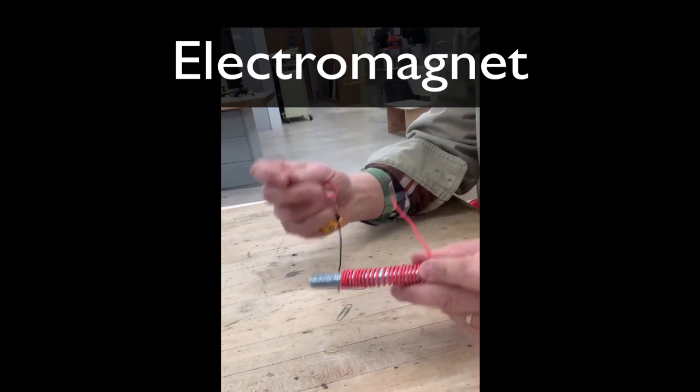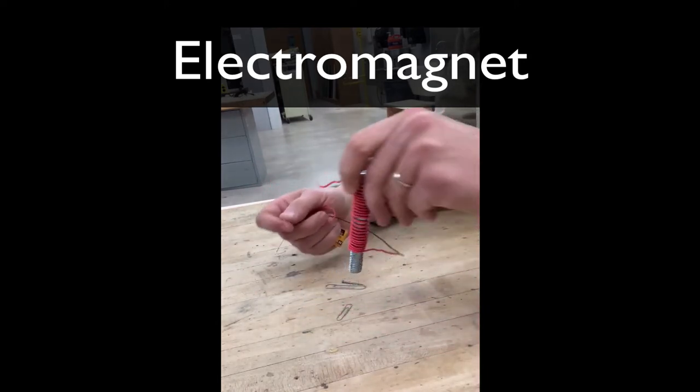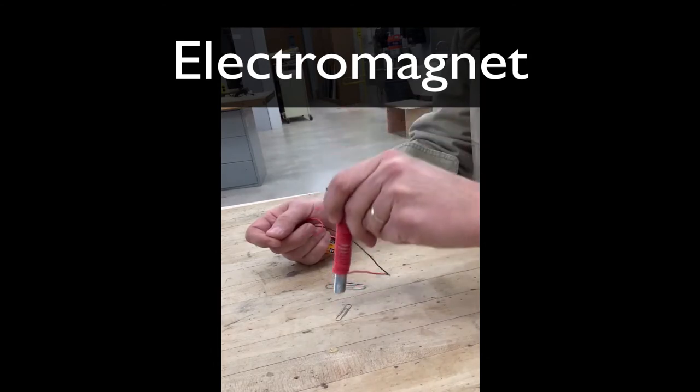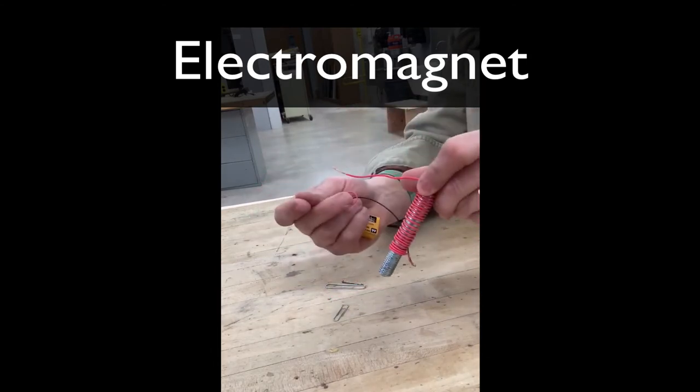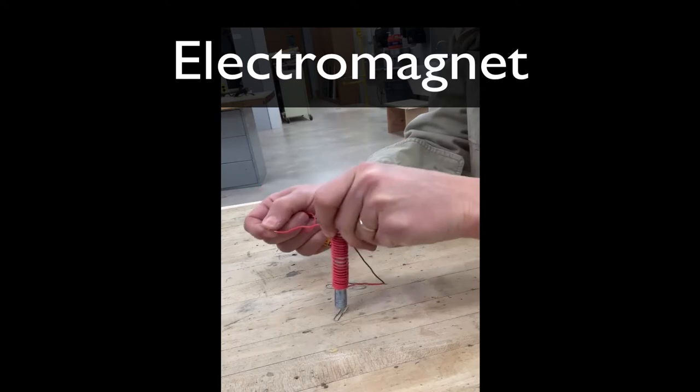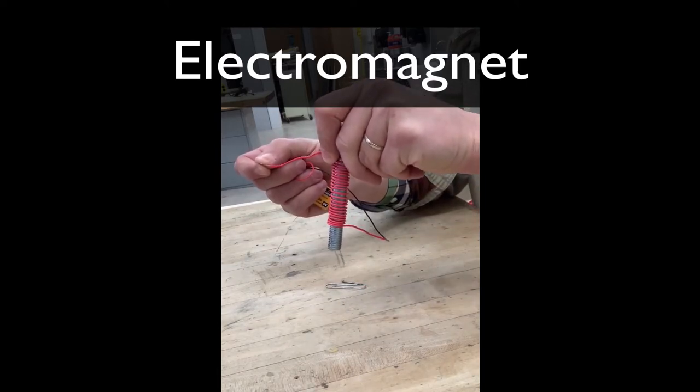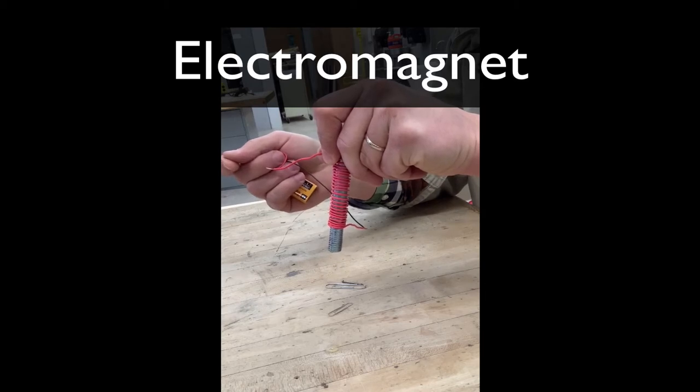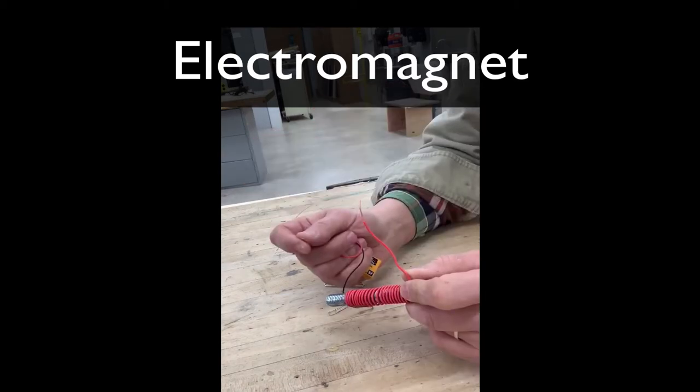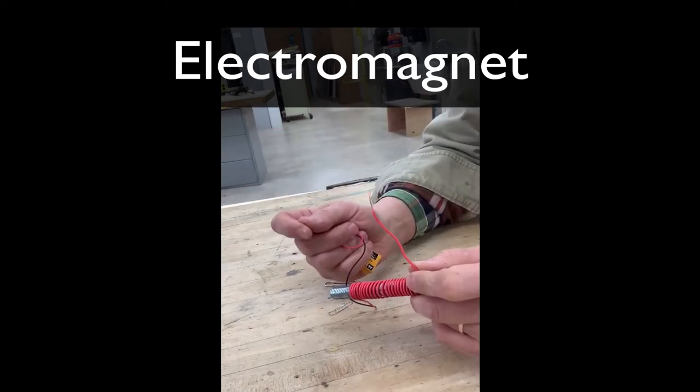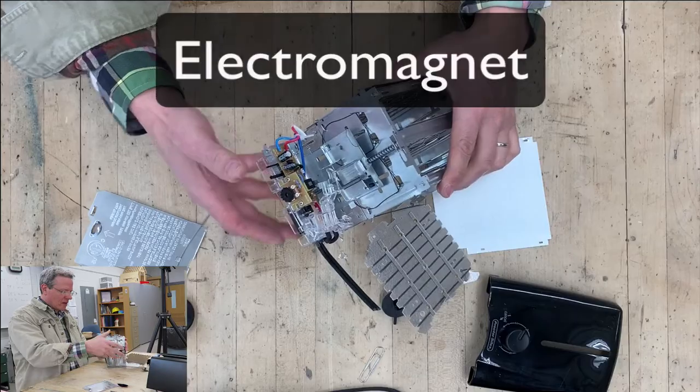With an electromagnet, you can turn the magnet on and off. For instance, when I try and pick up this paper clip, nothing happens. But when I put the electricity through it, now it can pick up that paper clip. I release the electricity and I release the paper clip. An electromagnet is a very cool electrical power system.